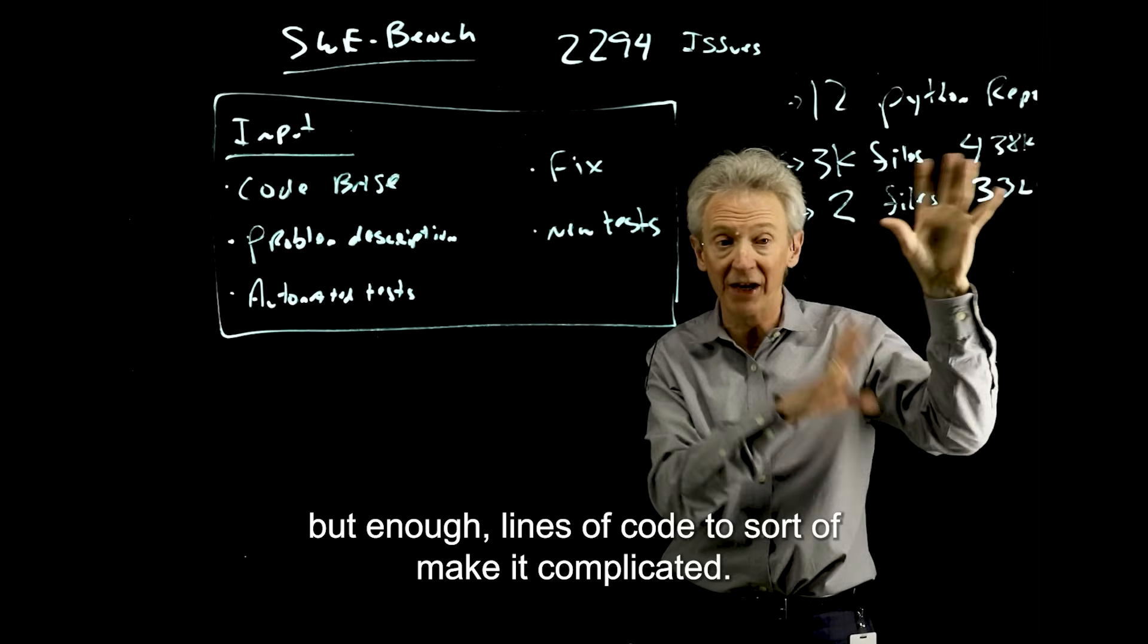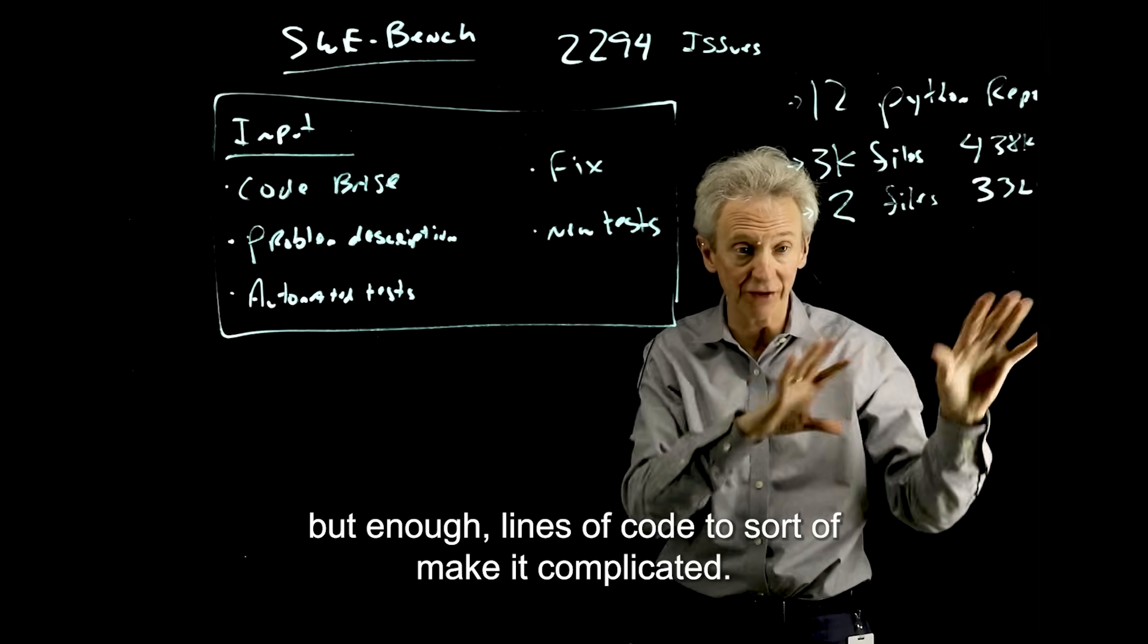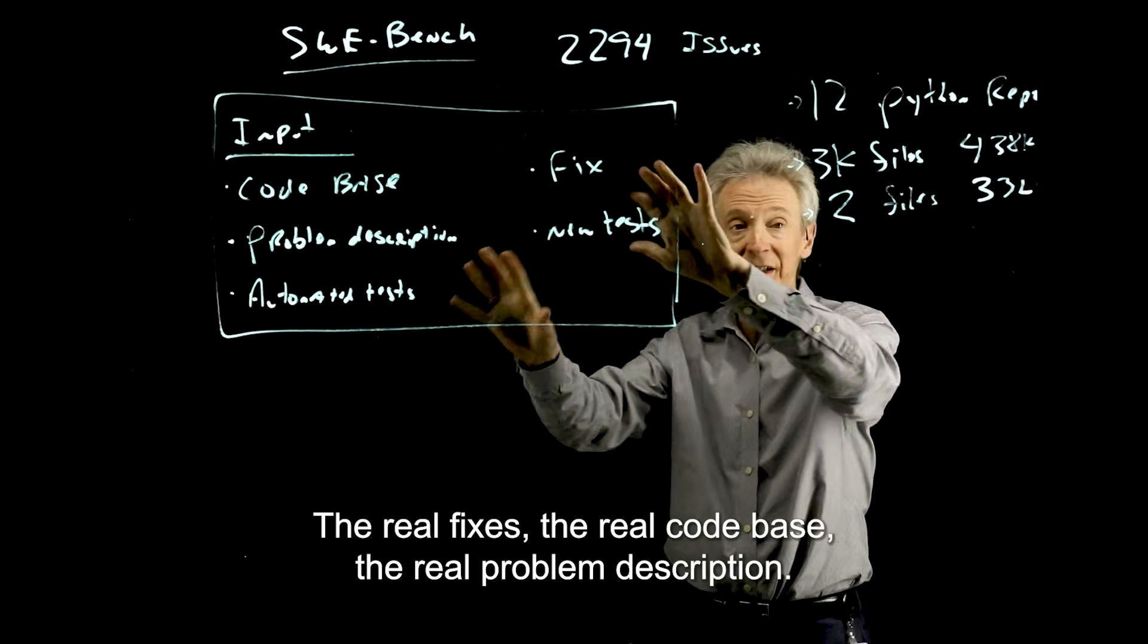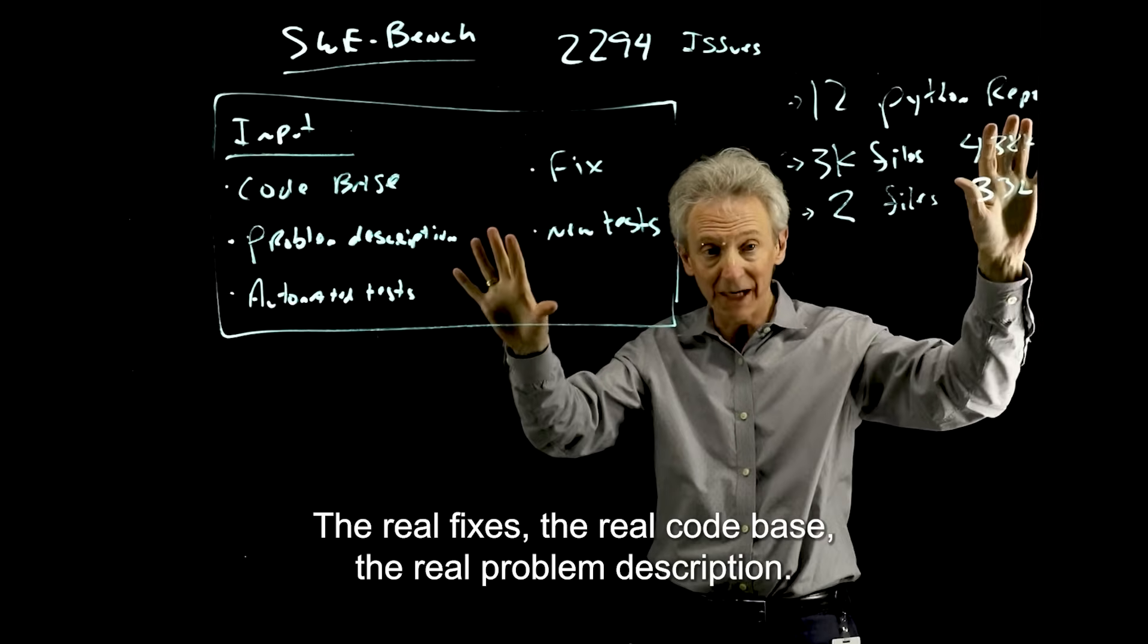So each of these fixes are just targeted toward just fixing that one bug. There's not a lot of lines of code, but enough lines of code to make it complicated. That's what this has, the real fixes, the real code base, the real problem description.